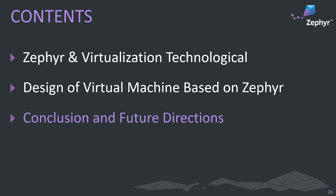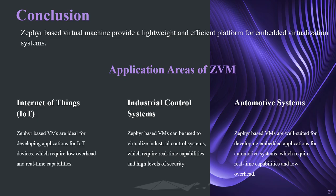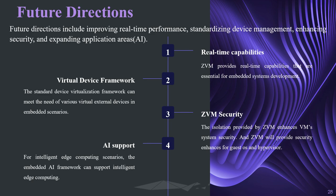In the third part, we summarize the content and illustrate future directions. The Zephyr-based virtual machine aims to provide a lightweight and efficient platform for embedded virtualization. Our system targets scenarios requiring lightweight virtualization such as the Internet of Things, industrial control, and autonomous driving. Our future optimization focuses on four points: real-time capability of ZVM, virtual device framework, ZVM security, and AI support, which will together build a comprehensive embedded intelligent computing system.